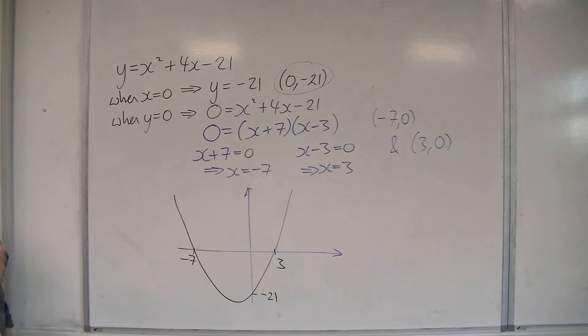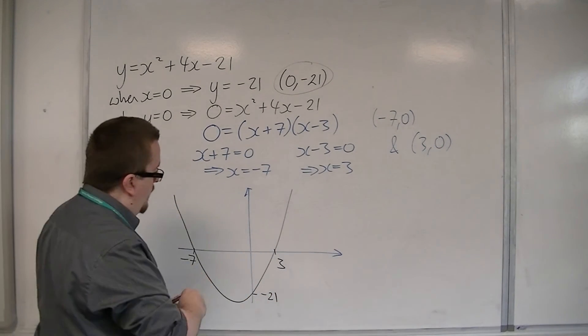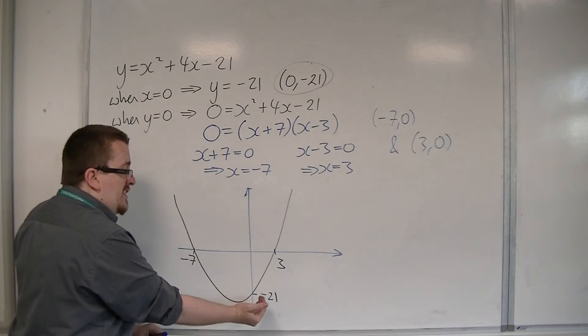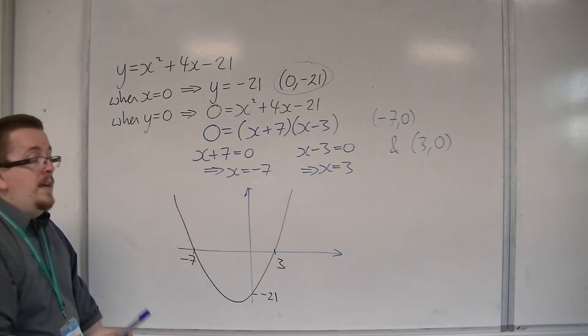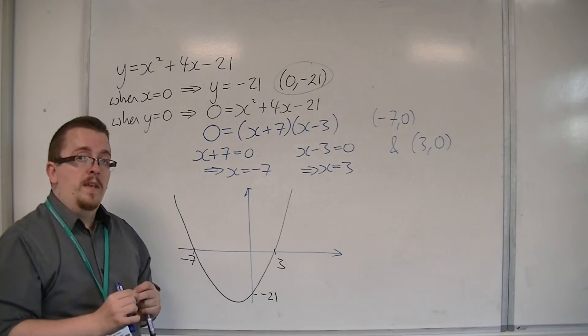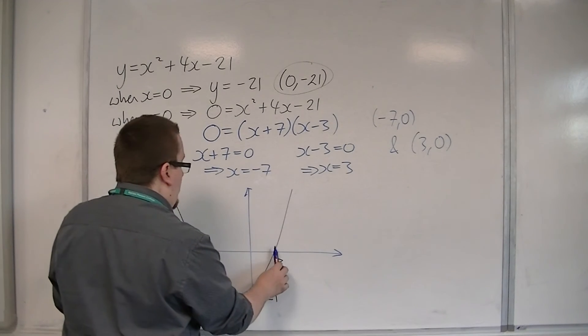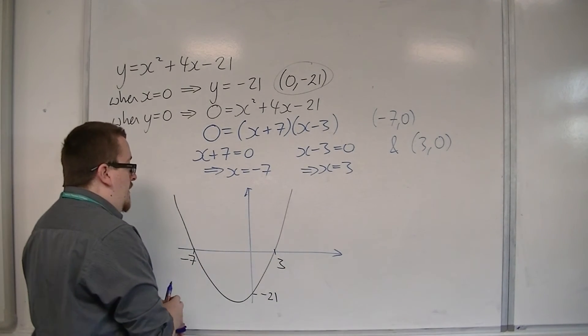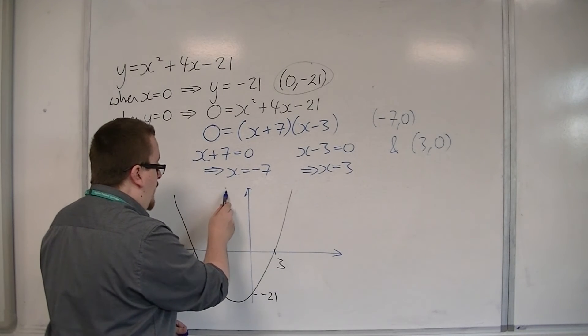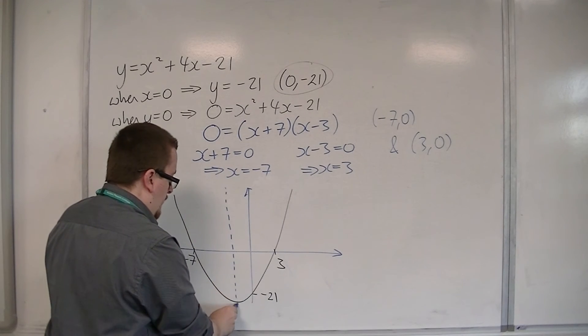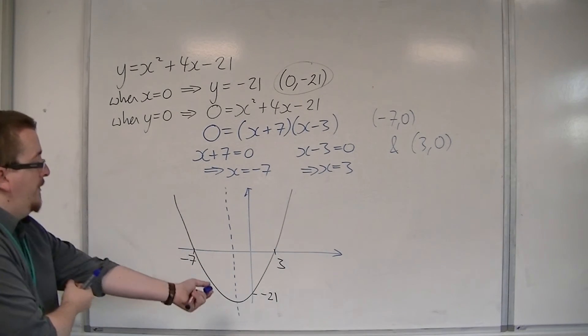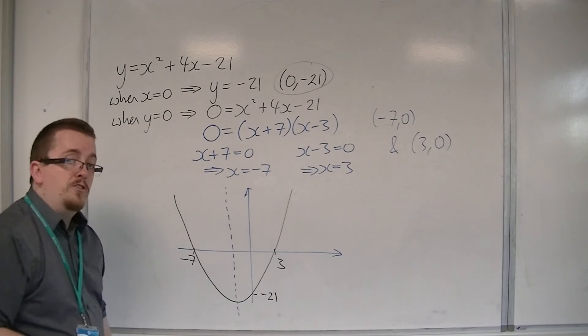Okay? And we can tell that the vertex is to the left of the y-axis because the curve is symmetric. Because there's that line of symmetry, and it's going through 3 and minus 7, that must mean that the line of symmetry that goes through the vertex must be halfway between those two points.